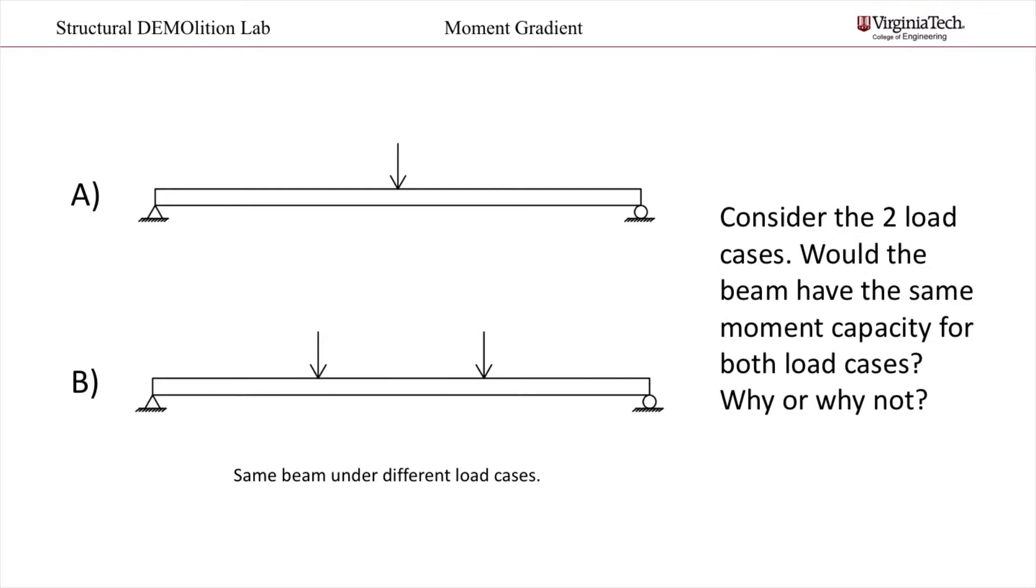The moment capacity is different depending on how the beam is loaded. Your intuition might say that the capacity is independent of the load case, because in many structural problems, you find a capacity and then check to see if the required moment ever reaches that value. But this is not the case with lateral torsional buckling, because it also depends on how the moment is distributed along the beam.